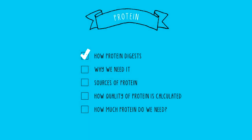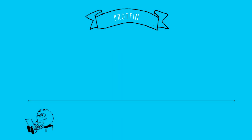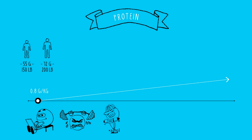Now you know how protein digests, why we need it, sources of protein, and how the quality of protein is calculated. But how much protein do you and your clients need? For sedentary, generally healthy adults, they'll need about 0.8 grams of protein per kilogram of body mass — that's 55 grams for a 150-pound person and 72 grams for a 200-pound person. However, that's the bare minimum — just enough for protein turnover and to prevent protein malnutrition. Our protein requirements go up if we are training hard, have a physical job, are injured, sick, or recovering from surgery, and if we are losing protein due to chronic physical stress or poor digestion.